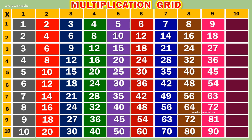Table of 10. 10 1s are 10. 10 2s are 20. 10 3s are 30. 10 4s are 40. 10 5s are 50.